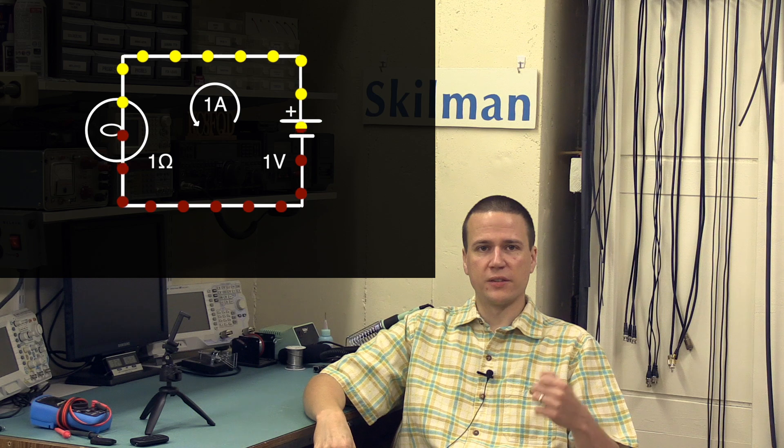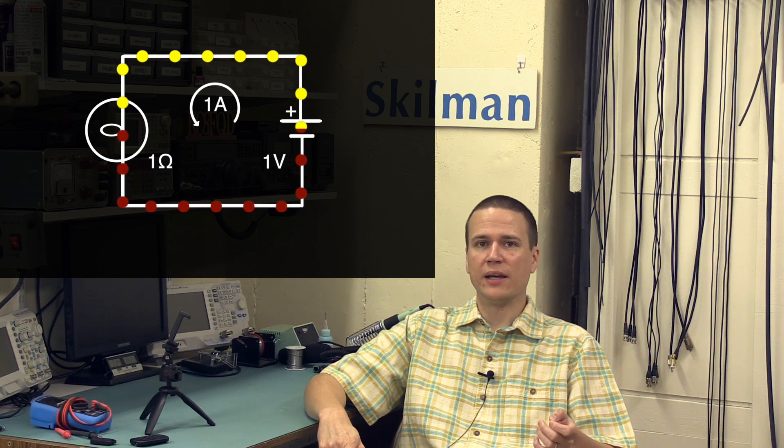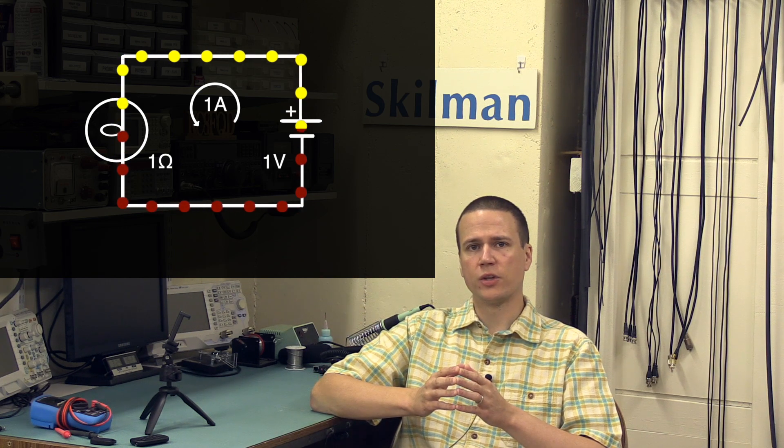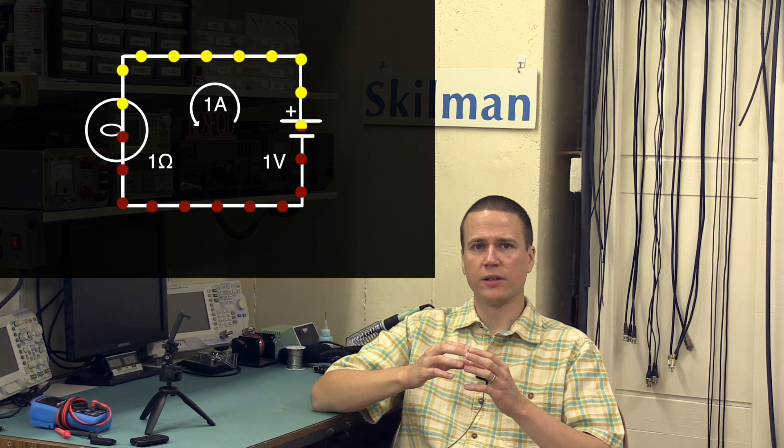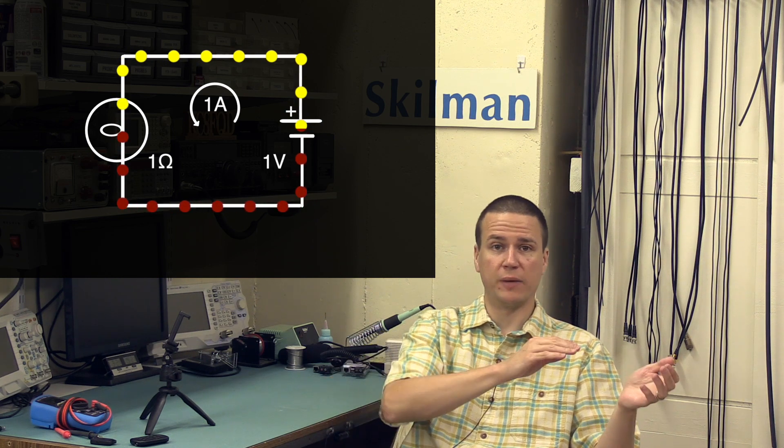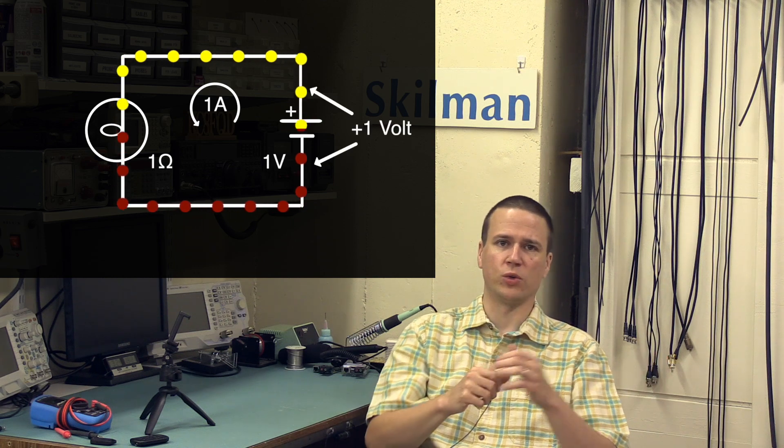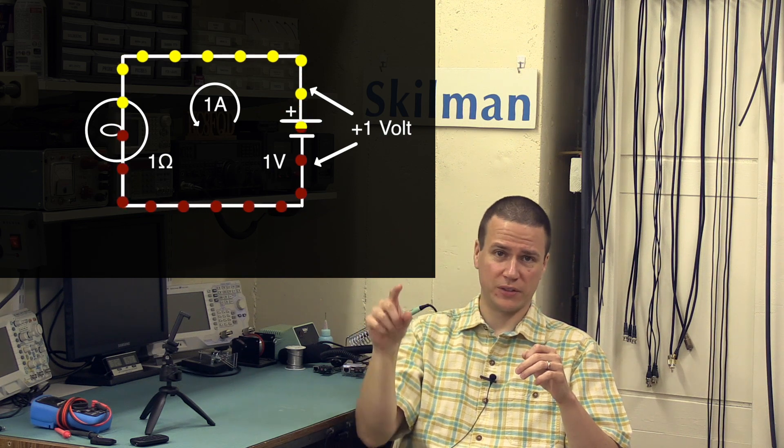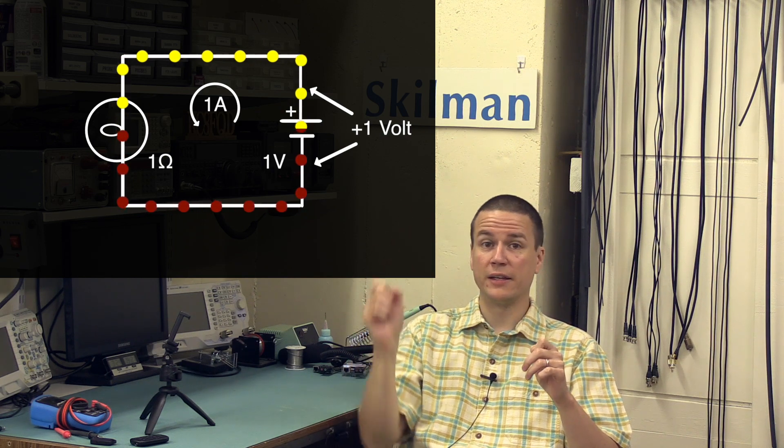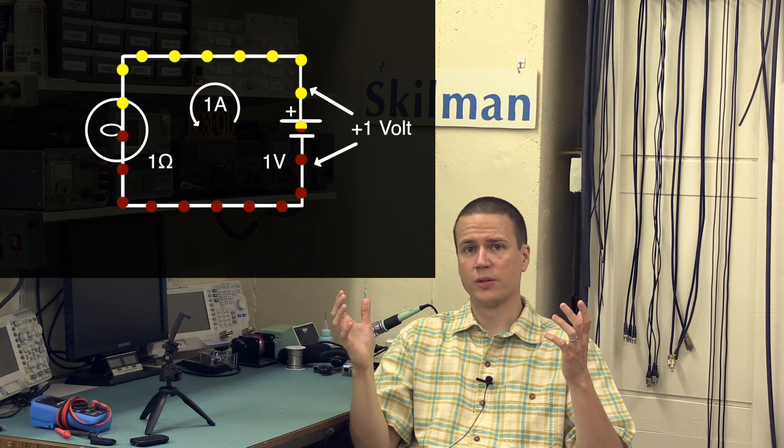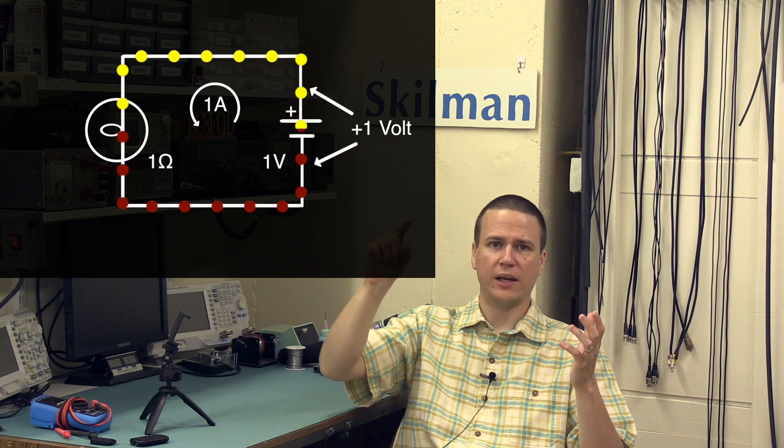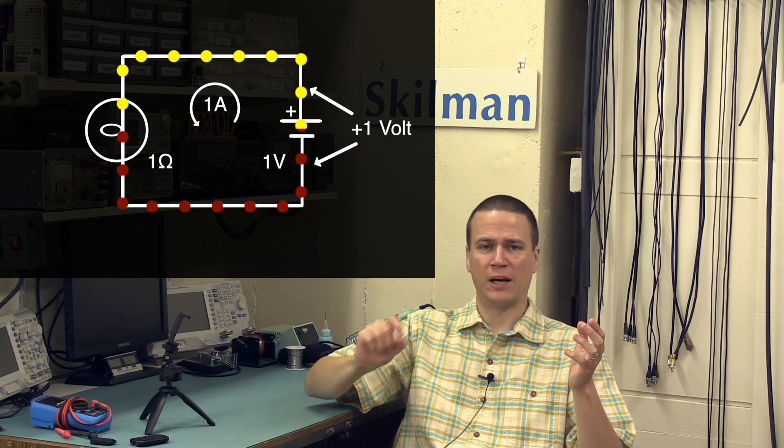See, as the bits of electric charge pass through the battery and get a push from the chemical reaction within it, they pick up a volt of potential energy. So, the potential difference between the point where the charge enters the battery and where it comes out is plus one volt. As the little bits of charge pass through the resistance of the light bulb, they give up one volt of energy. So, the potential difference between the point where the charge enters the light bulb and where it leaves is minus one volt.